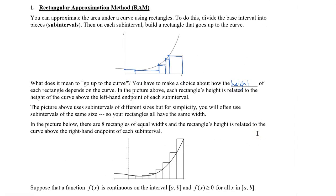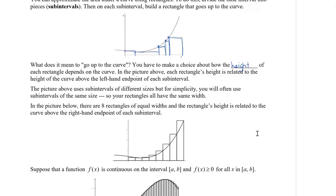In the picture below, there are eight rectangles of equal widths, and the rectangle's height is related to the curve above the right-hand endpoint of each subinterval. So if you take a look at each rectangle, the right endpoint is based on the curve — all of the right-hand points of the rectangle are on the curve.